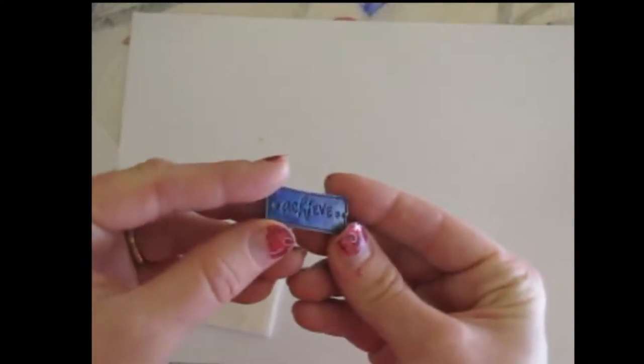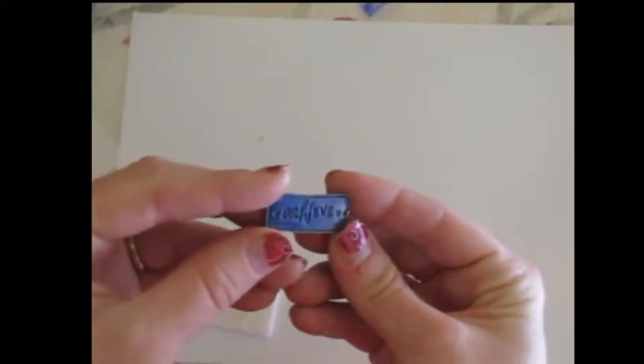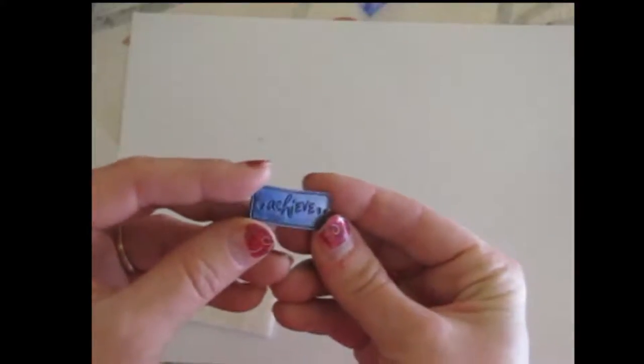This is a metal charm. There you can see it. It was pewter color and I just tinted it blue by sponging a little bit of alcohol ink on top.